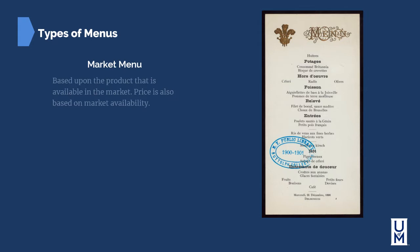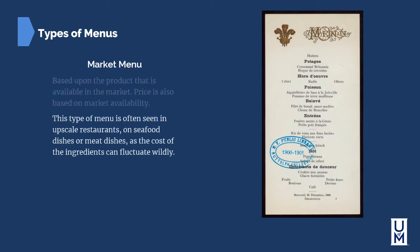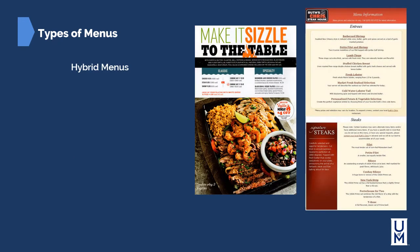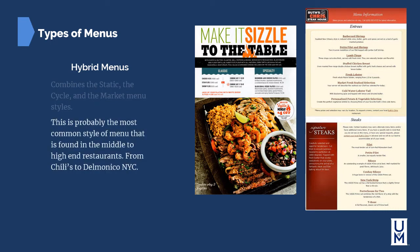A market menu is based on the product available in the market, and the price is based on market availability. This type of menu is often seen in upscale restaurants on seafood or meat dishes, as the cost of these ingredients can fluctuate wildly. Hybrid menus combine the best qualities of the static, cycle, and market menu styles, and are probably the most common style found in mid- to high-end restaurants, from Chili's to Delmonico's in New York City.